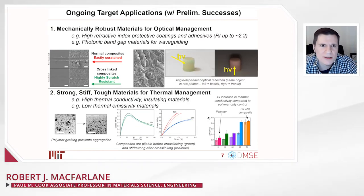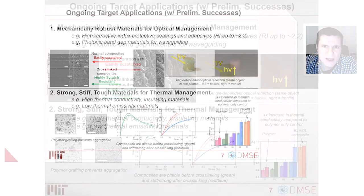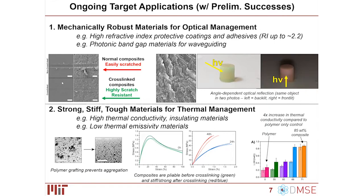Potential applications include mechanically robust materials for optical management. Shown here on the left, cross-linked materials compared to non-cross-linked materials show significantly greater scratch resistance. When a micro-indenter scratches the surface of a non-cross-linked polymer composite, it is very easily scratched. However, once the cross-linking process is done, the material is incredibly scratch resistant, remains optically clear, and has material toughness and hardness even better than the polymer alone. This would be beneficial for something like a protective screen cover that is optically transparent but mechanically stiff.